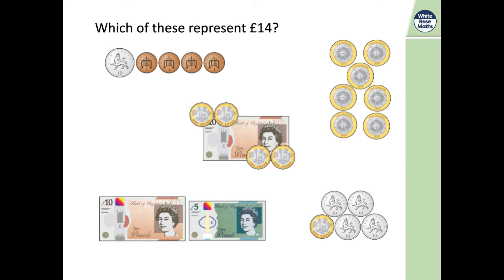Okay, so you've got five different representations here. Which one or ones, there might be more than one, shows 14 pounds. So pause it, look at each one, look quite carefully. These are two pound coins over here, by the way. And these ones are one pound coins. Some of them aren't too easy to distinguish. So pause, have a go and come back for the answers.